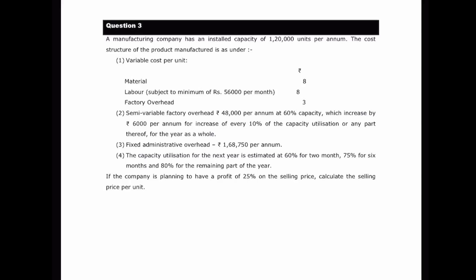A manufacturing company has an installed capacity of 1,20,000 units per annum. The cost structure of the product manufactured is as under: variable cost per unit — material 8 rupees per unit, labor 8 rupees per unit subject to a minimum of 56,000 rupees per month, factory overhead 3 rupees per unit, semi-variable factory overhead 48,000 per annum at 60% capacity which increases by 6,000 per annum for every 10% increase in capacity utilization. Fixed administrative overhead 1,68,750 per annum.